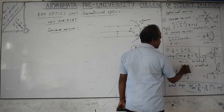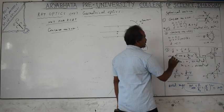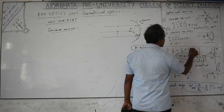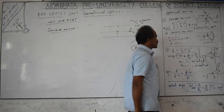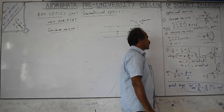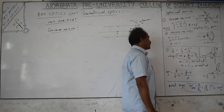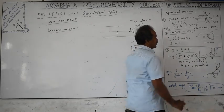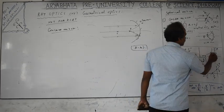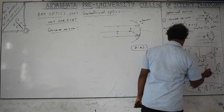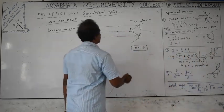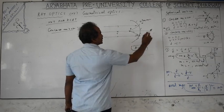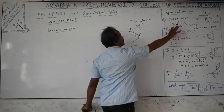Positive magnification means an erect image; negative magnification means an inverted image. The mirror formula is: 1/f = 1/u + 1/v, applicable for both concave and convex mirrors. For a convex mirror, the image nature is always fixed. But for a concave mirror, different cases arise depending on the object position, which we'll go through in tabular form.